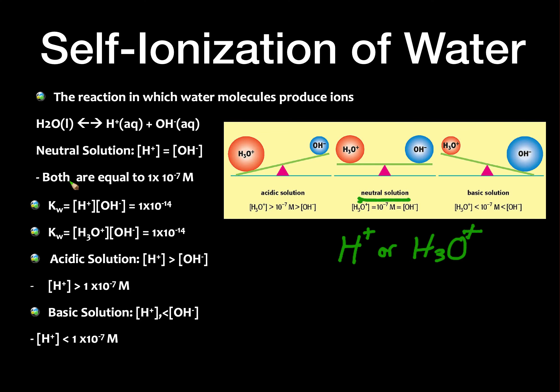In a neutral solution, both are equal to 1×10⁻⁷ molar. We have the equation: Kw equals the hydrogen ion concentration times the hydroxide ion concentration, which equals 1×10⁻¹⁴. This equation can also be written with H₃O⁺ instead of H⁺ — it means the exact same thing.